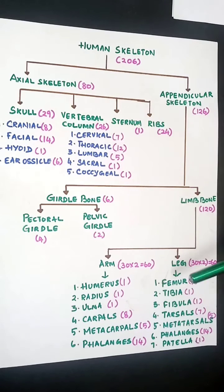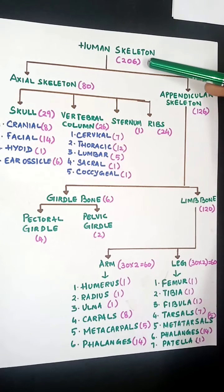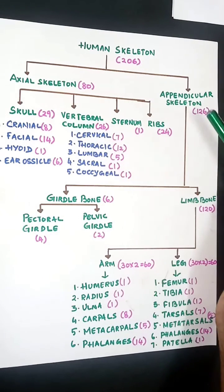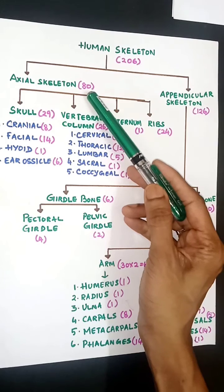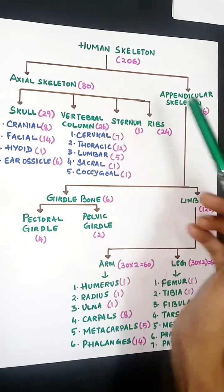The human skeleton is represented in this flowchart. There are 206 bones total, which we divide into axial skeleton and appendicular skeleton. Under axial skeleton, you have 80 bones, and appendicular skeleton has 126 bones.